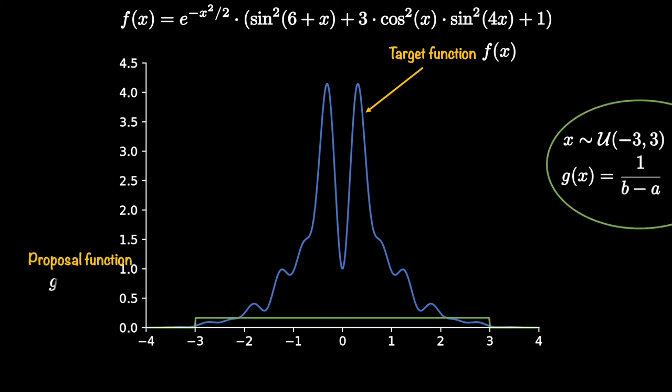One proposal function that we can always use is the uniform distribution because we know how to sample from it. It is also the easiest and fastest to sample from. We will tell the uniform distribution sampler to give us a random number between and including minus three and three.